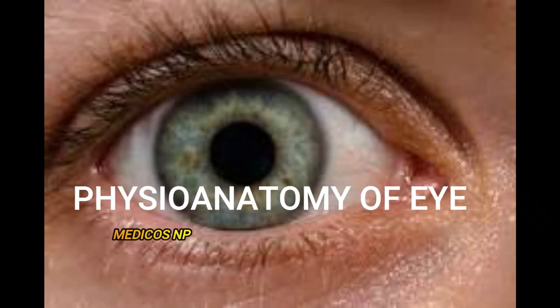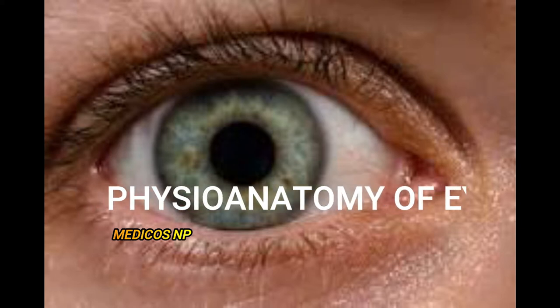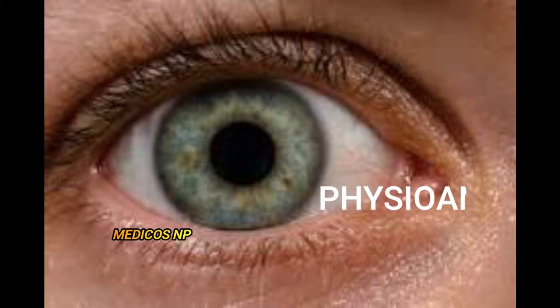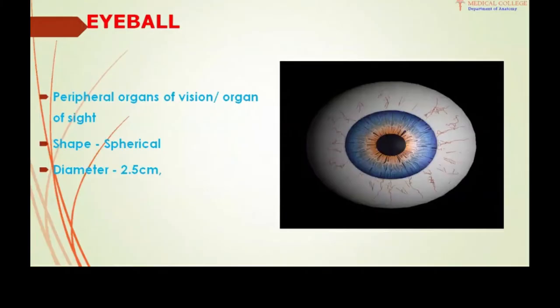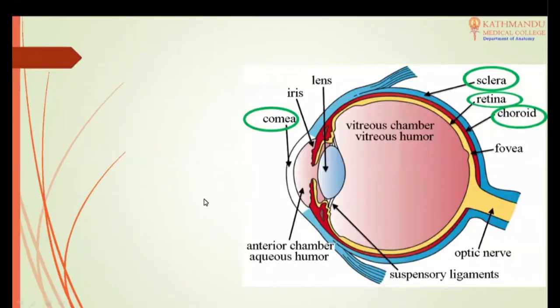Hello everyone, welcome back to our channel Medicos. Today we are going to start studying from the very basic concept, so there will be several parts. Today we will study the basic structure and function of the eye. The eye is a special organ. The adult human eye is hollow, spherical, and 24 millimeters in diameter.